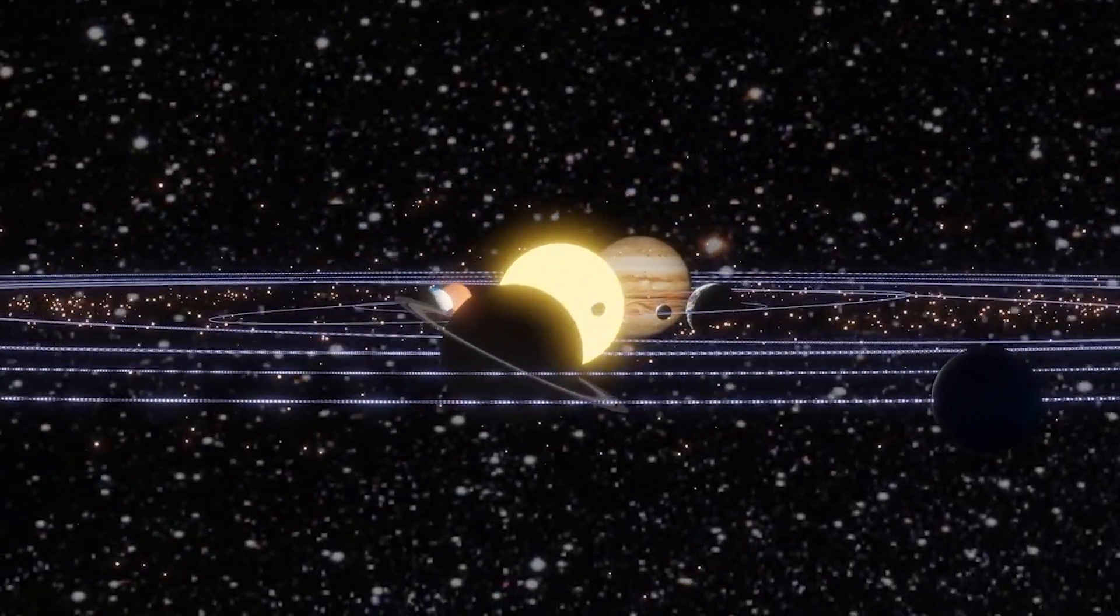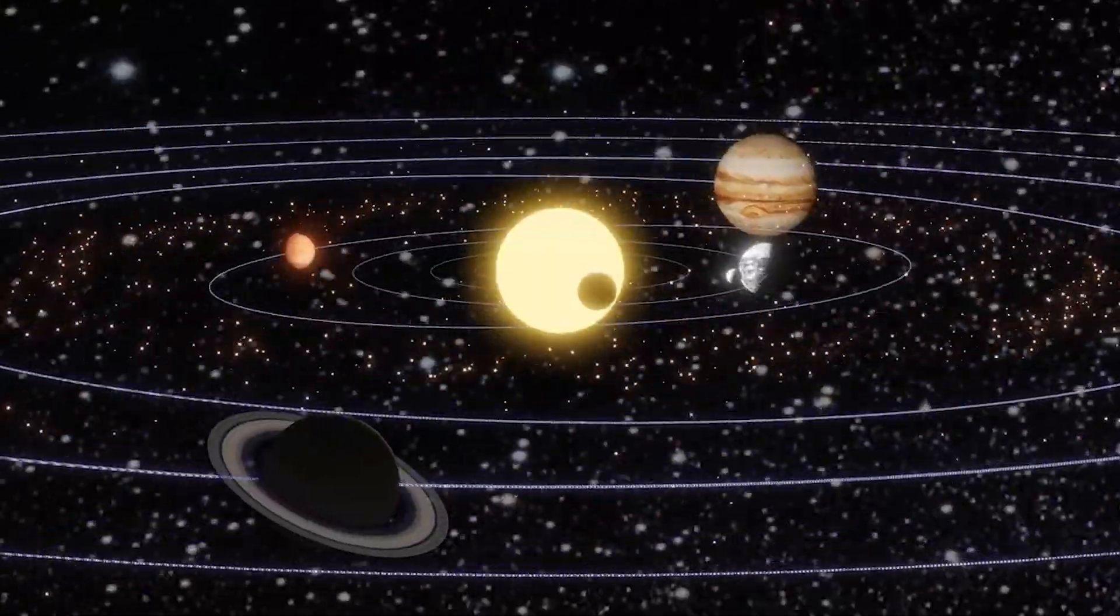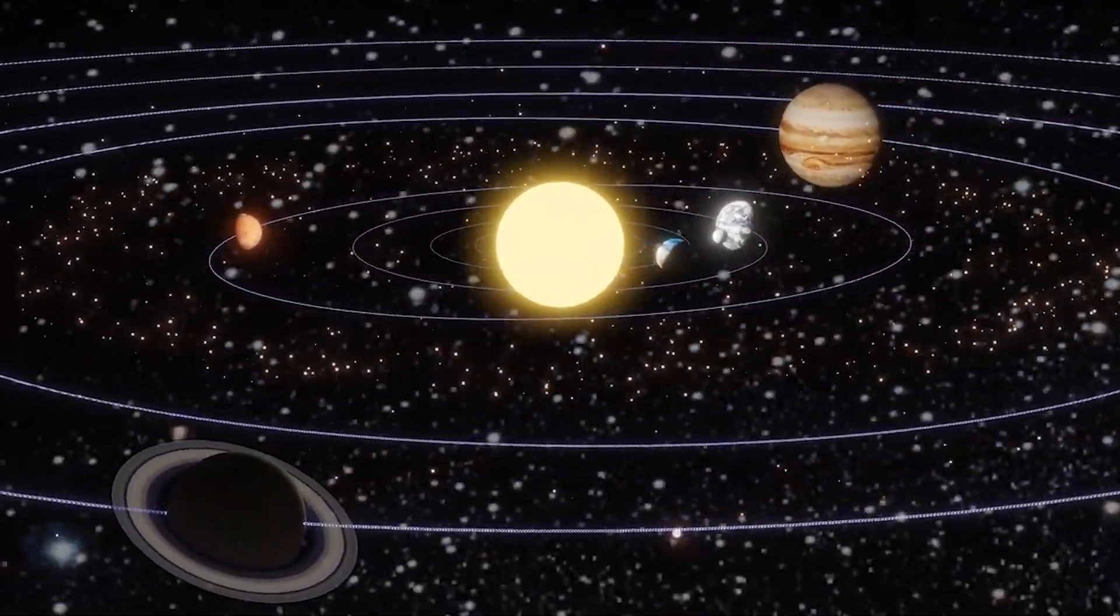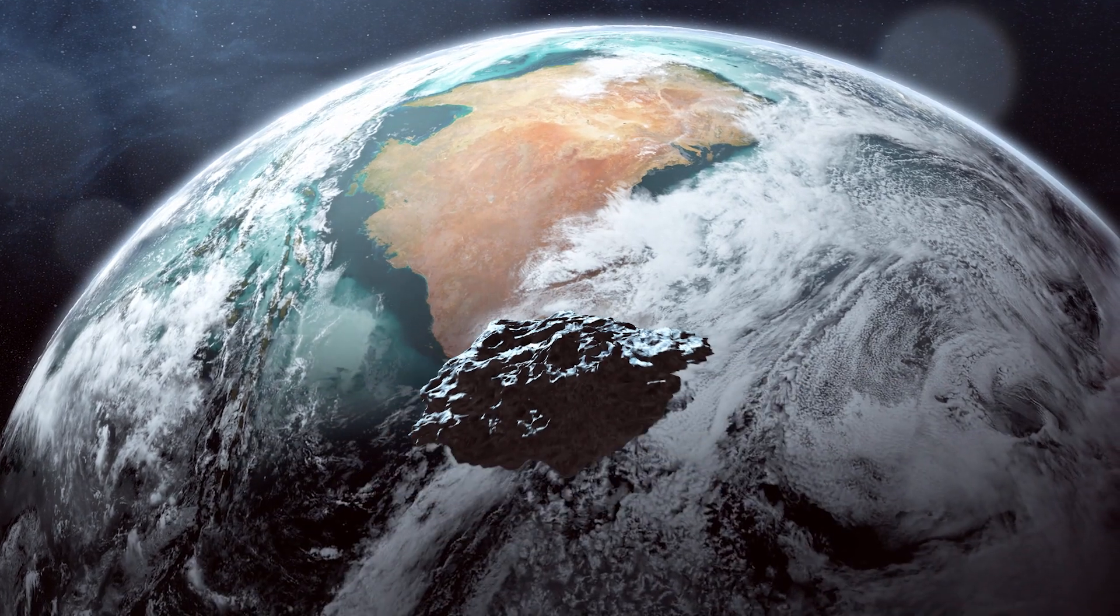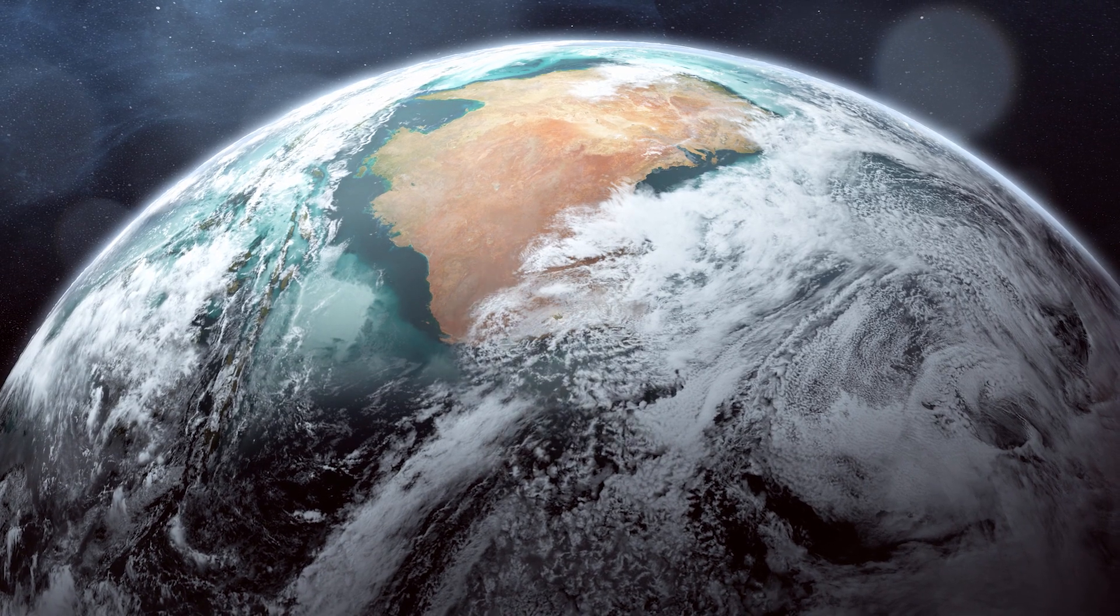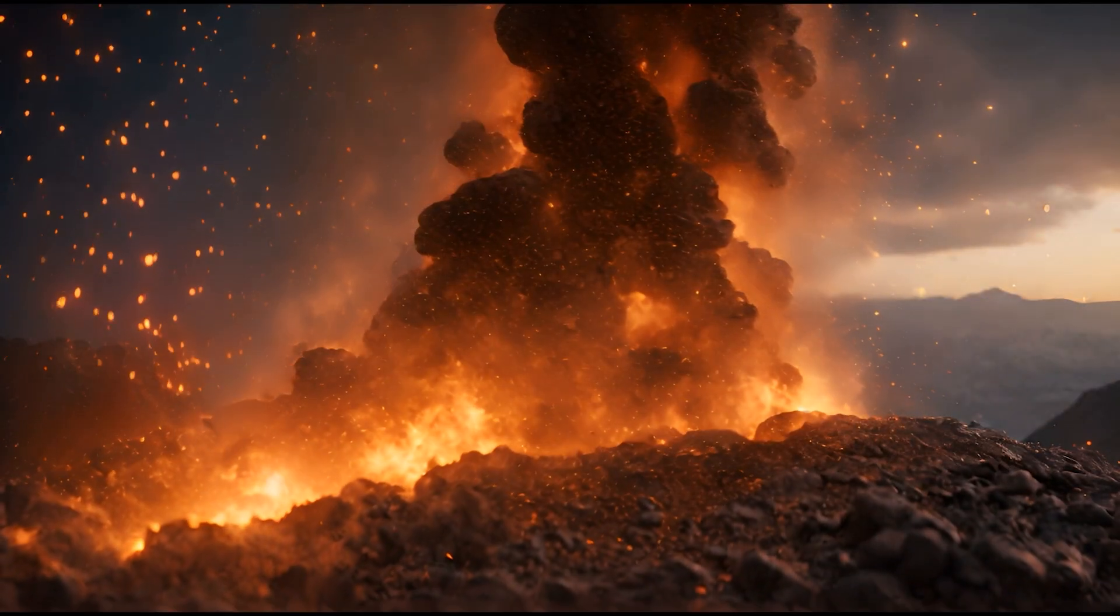Here's the catch. Its orbit remains sufficiently uncertain. There is an interval range where if it threads that keyhole, we call it a keyhole, about 600 to 700 miles. If its orbit goes through that range, Earth's gravity will be just wrong so that it will alter its orbit so that it will hit us seven years later.